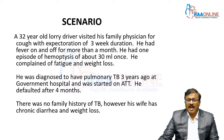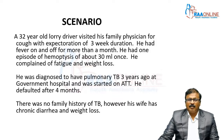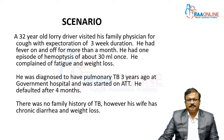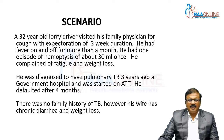He was diagnosed to have pulmonary TB three years back at a government hospital and was started on ATT. He defaulted, discontinuing after four months. There was no family history of tuberculosis. However, his wife has chronic diarrhea and weight loss.